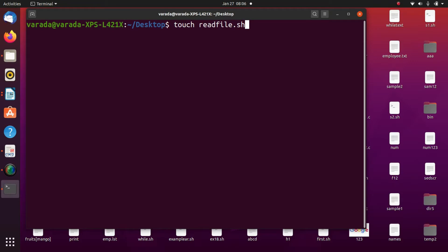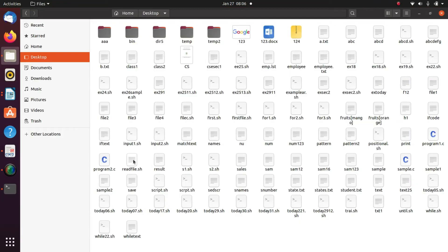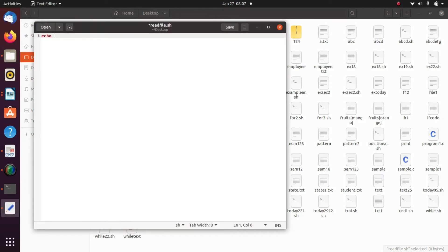For that we are going to create the file readfile.sh by using touch command. Echo, enter a number. I am going to write the read command. This is the variable num. Now, I am going to display number is dollar num. Echo, enter a name. Read name. Echo, I am going to display the name. Name is dollar name. Save the program.